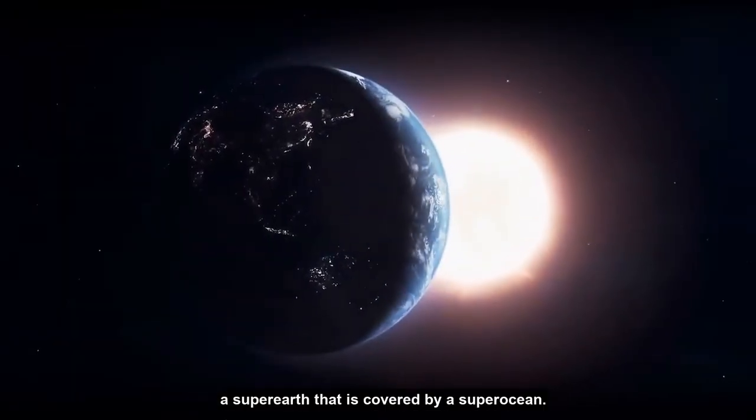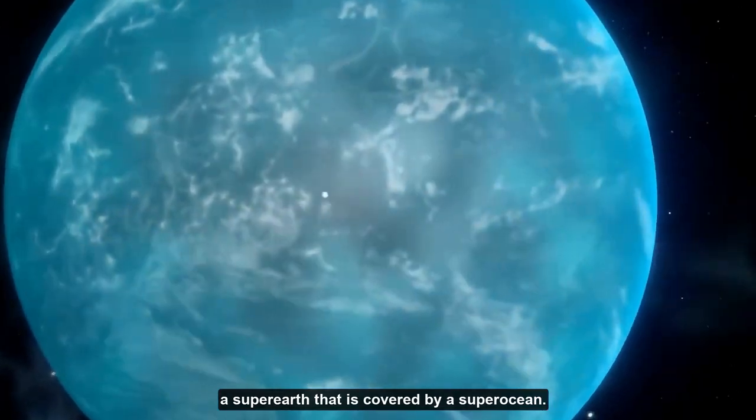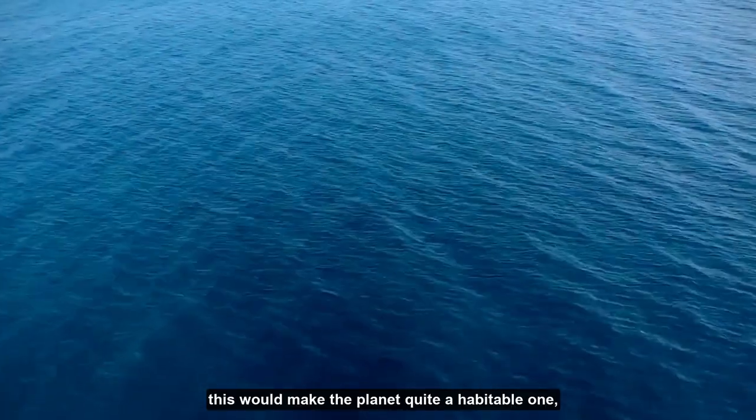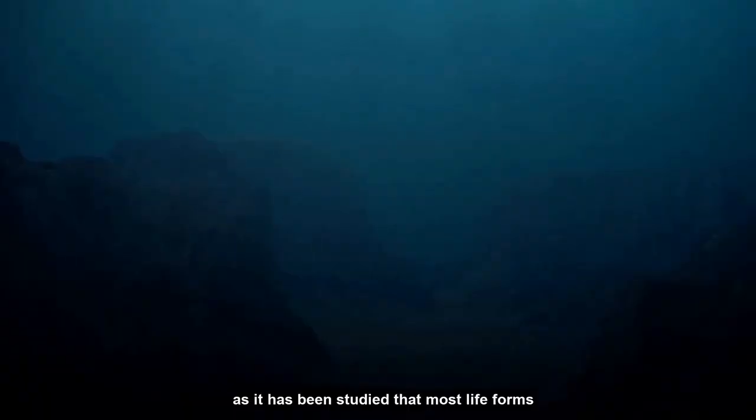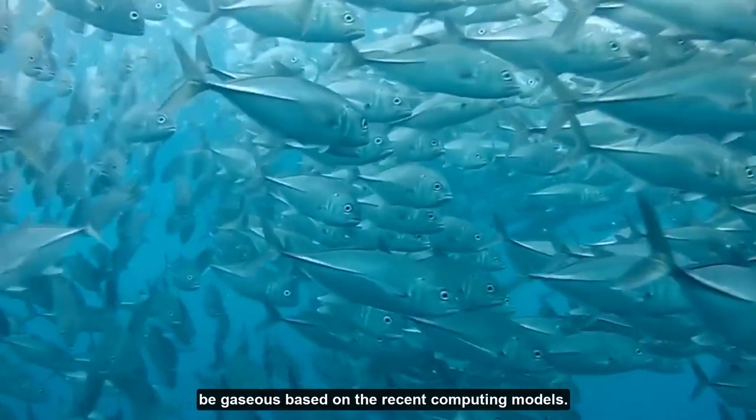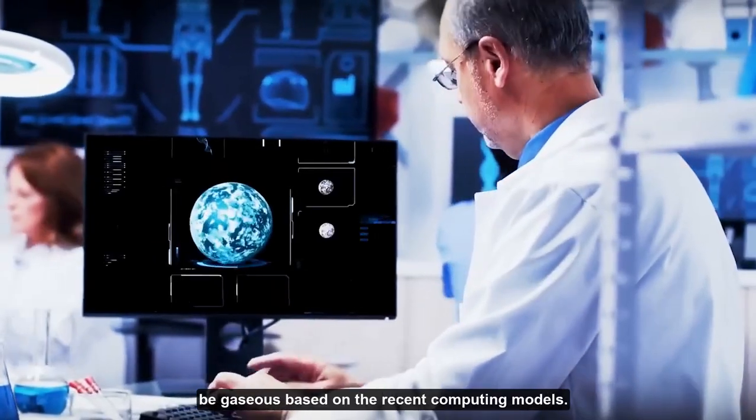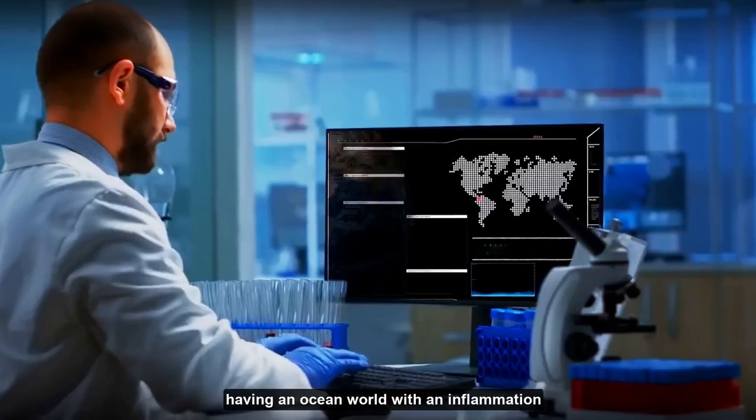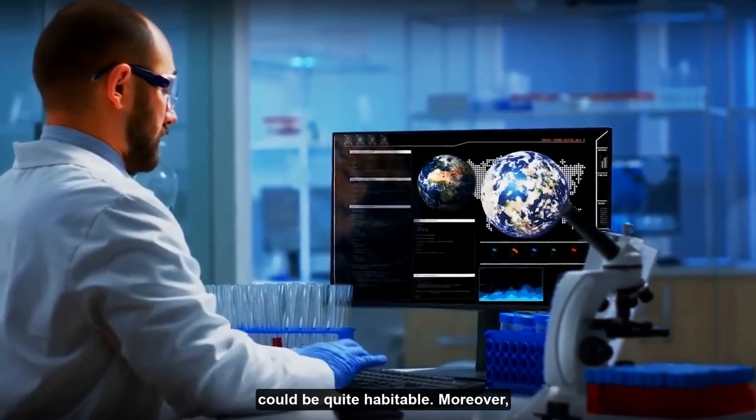It has also been predicted that Kepler-22b is a super-Earth that is covered by a super-ocean. If this is true, this would make the planet quite habitable as it has been studied that most life forms originated from water. However, there are others who believe that the planet could be gaseous. Based on recent computing models, if we are to look at this from a theoretical point of view, having an ocean world with an inclination could be quite habitable.